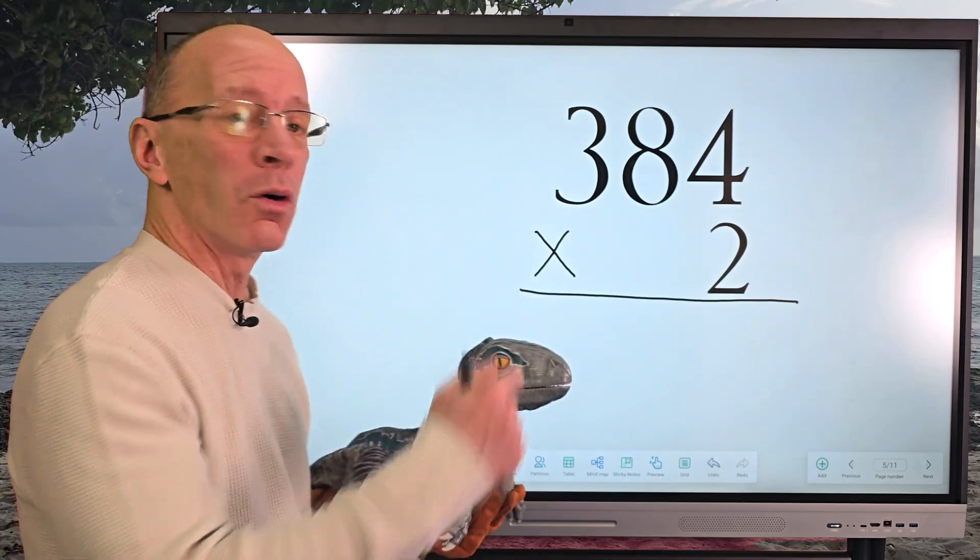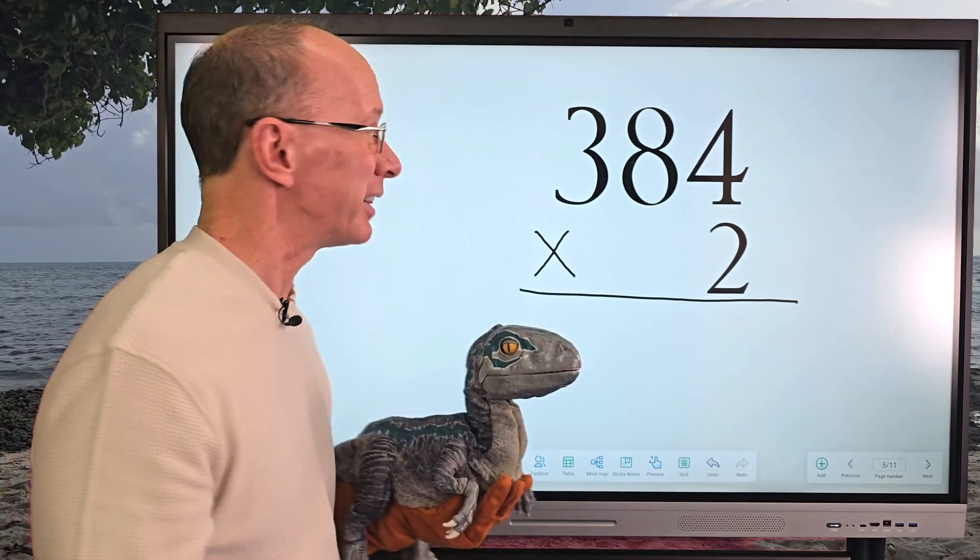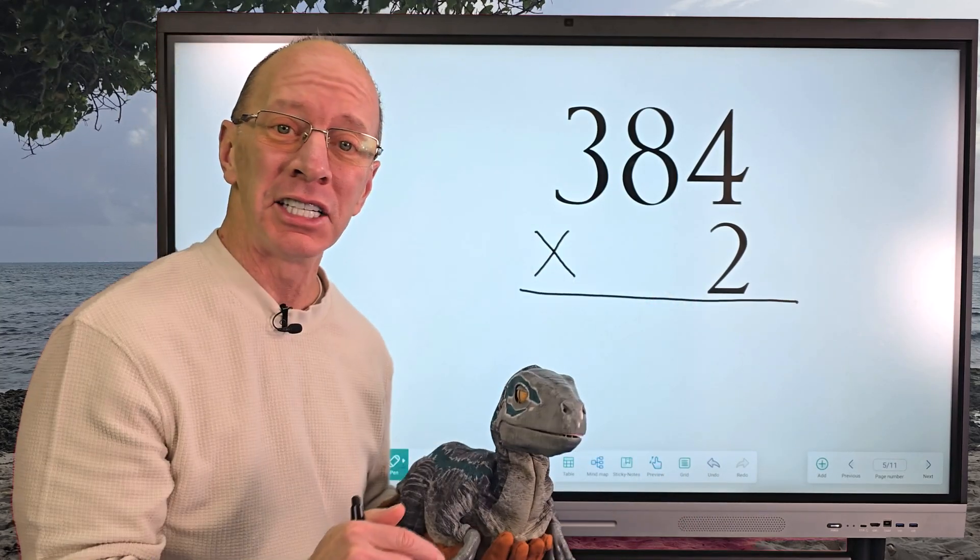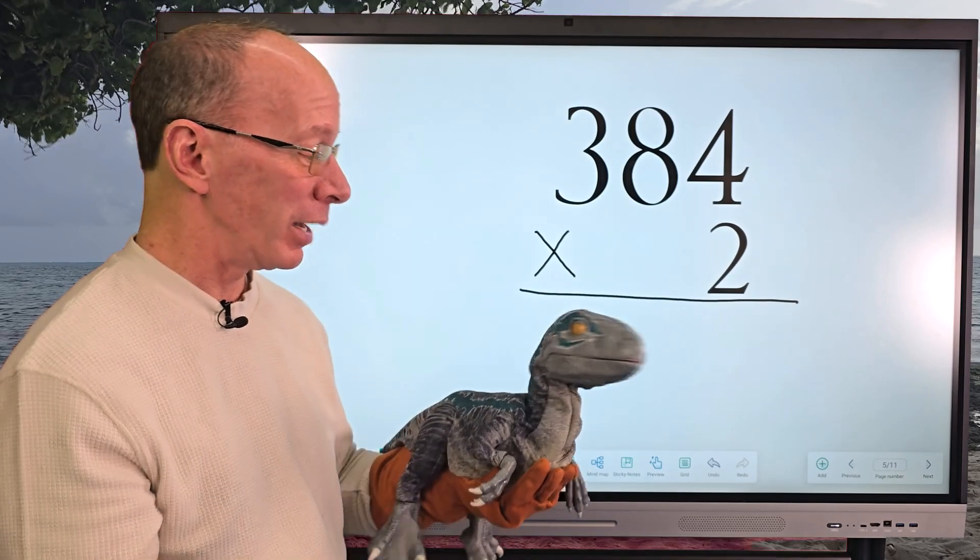Hey, welcome to the show. Today we're going to be doing multiplication. That's right, we're going to multiply a three-digit number by a one-digit number, and little raptor is going to be helping me. You ready to get started?